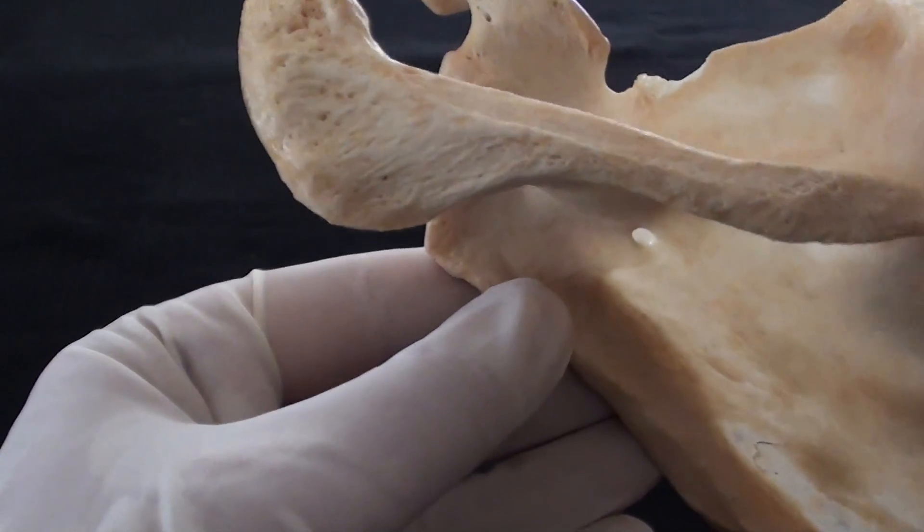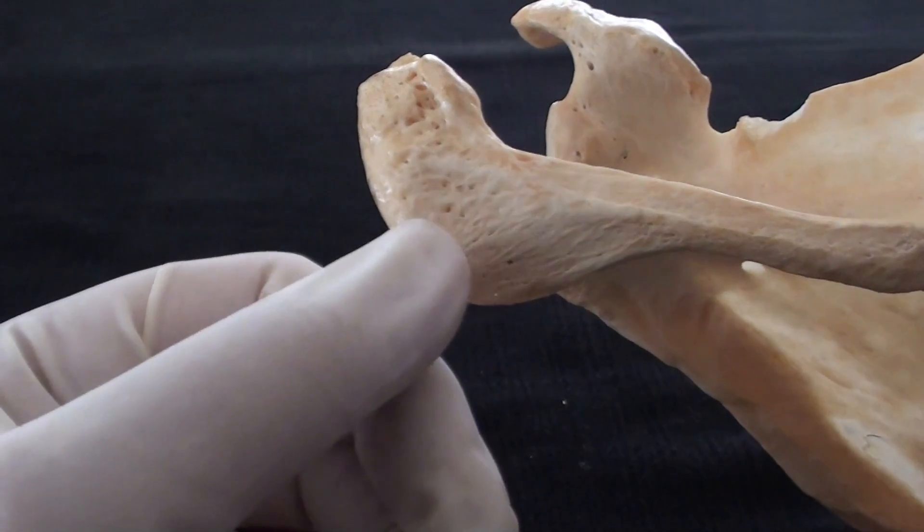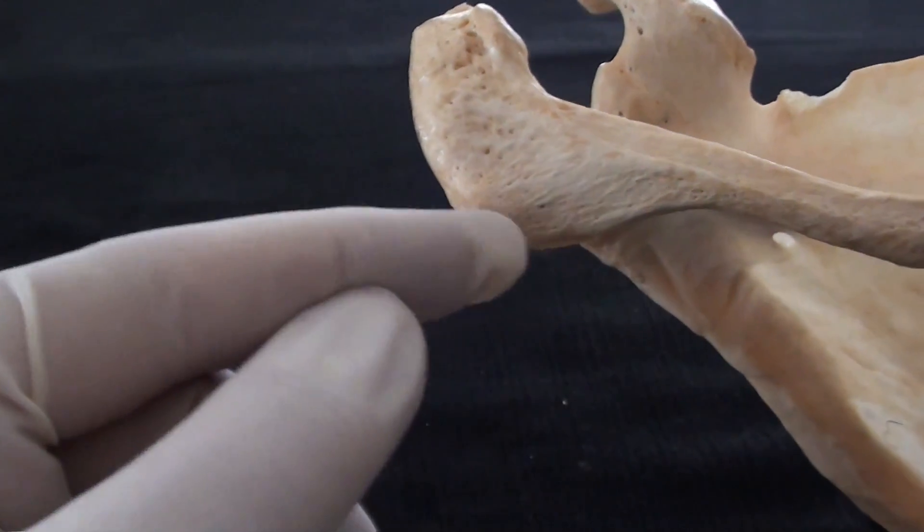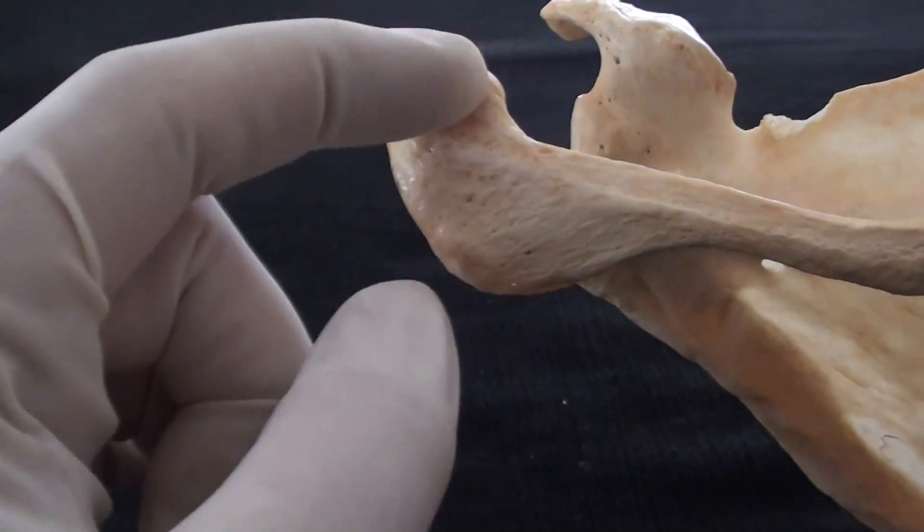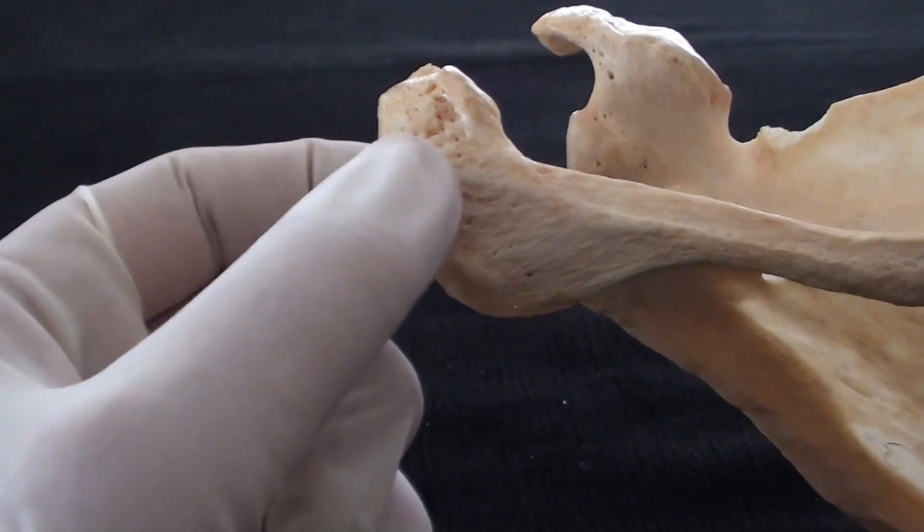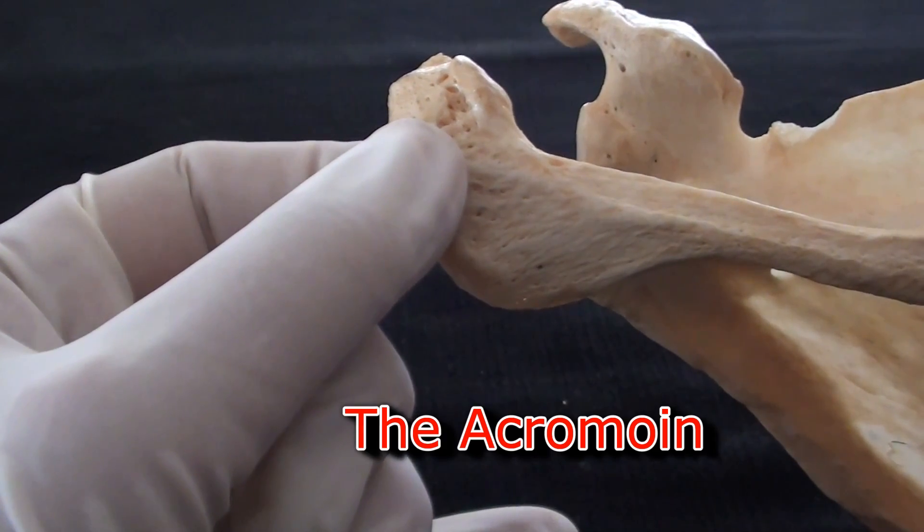When the spine of the scapula reaches the most lateral part it forms the angle before it terminates creating this huge part that is named as the acromion of the scapula.